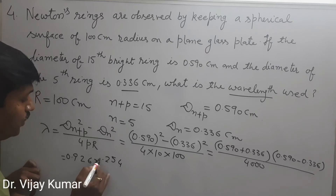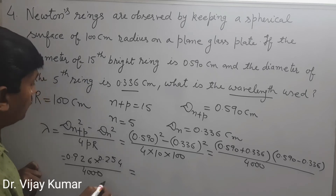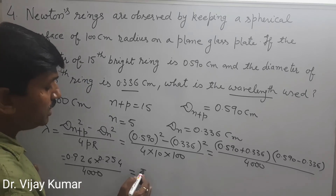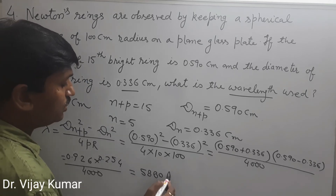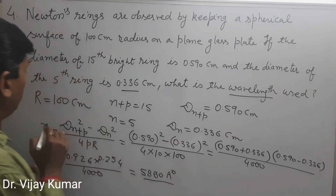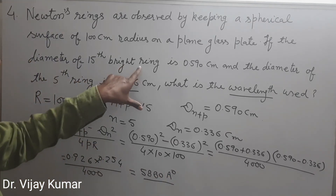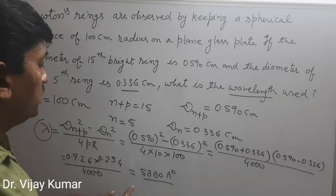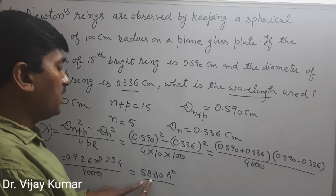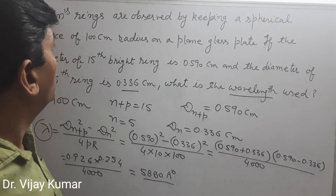After solving, we get 0.926 × 0.254 / 4000, which gives approximately 0.24 / 4000. The wavelength of monochromatic light used is 5880 Angstrom.